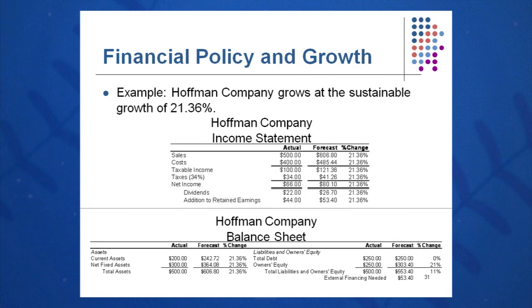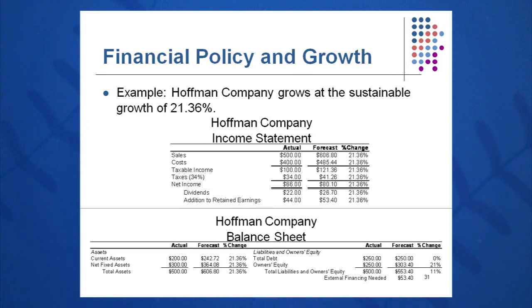Let's also calculate the sustainable growth rate, another key growth rate to bound things for Huffman Company. SGR is how fast I can grow my company's sales, costs, and assets without any external equity financing. Equity financing is avoided because it's expensive — using an investment bank to underwrite a new stock issuance can cost millions of dollars. It's much easier to just get debt financing, provided the debt-to-equity ratio isn't getting out of control.